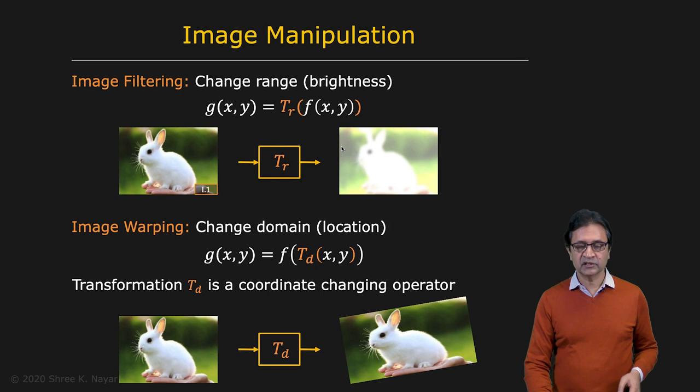And then there is another class of image manipulations, which we will call image warping. In this case, you're actually going to act on the domain of the image. So once again, you have your image F of X, Y, and your output is G of X, Y.